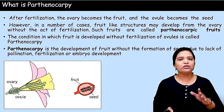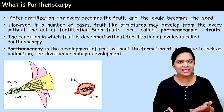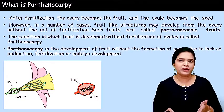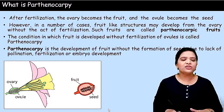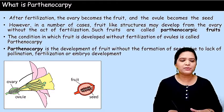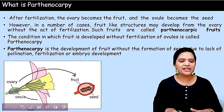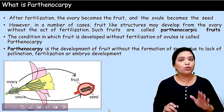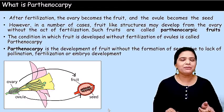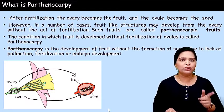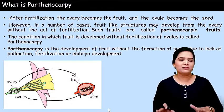In normal fruit development, after fertilization through the sexual method of reproduction, a fruit is produced. Generally the fruit part is produced from the ovary and the seed part is produced from the ovule. That means after fertilization the ovary becomes the fruit and the ovule becomes the seed. This is in the normal sexual method of reproduction.